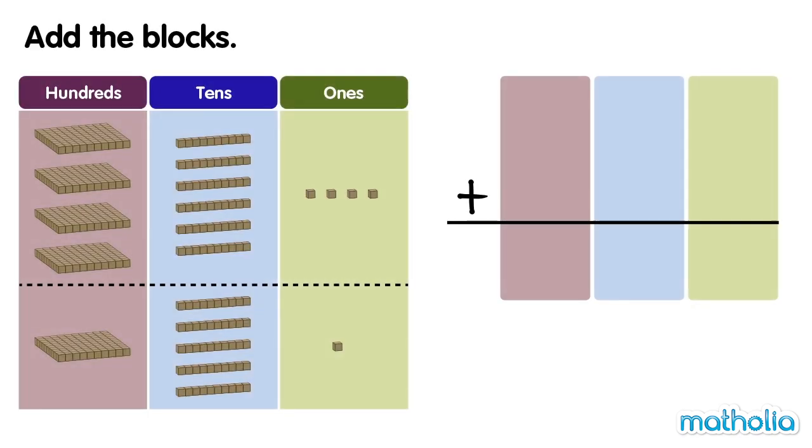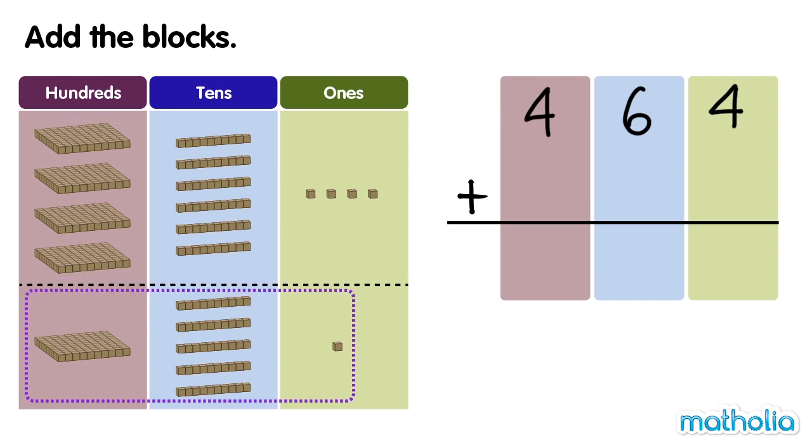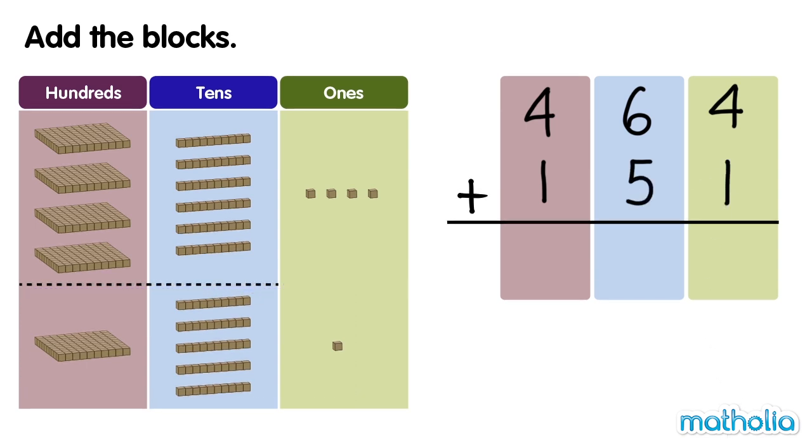Add the blocks. We have 464 blocks and 151 blocks. Let's start by adding the ones. 4 ones plus 1 one equals 5 ones.